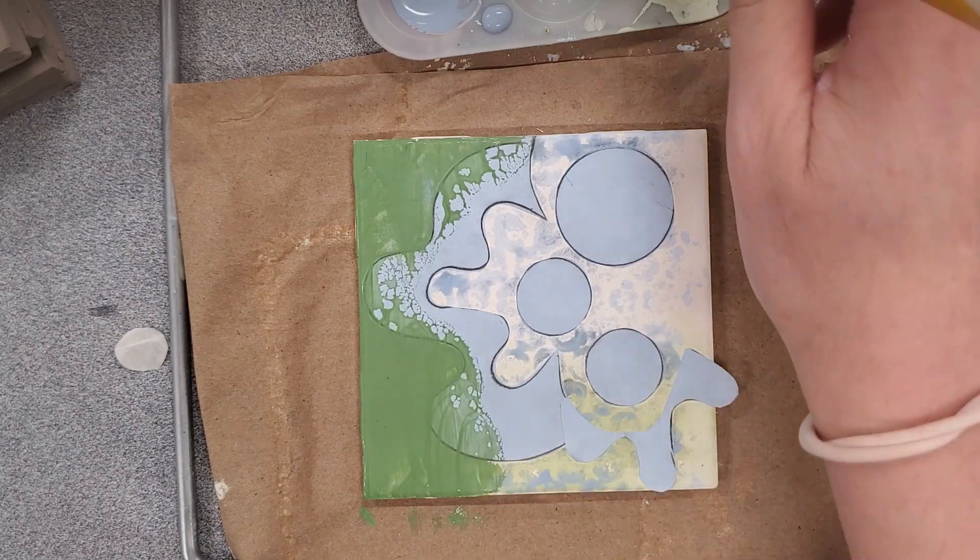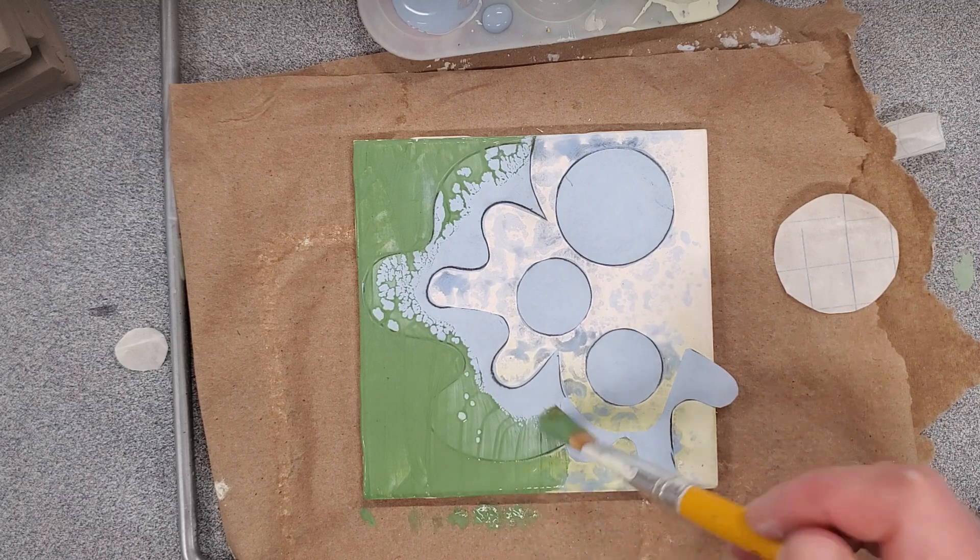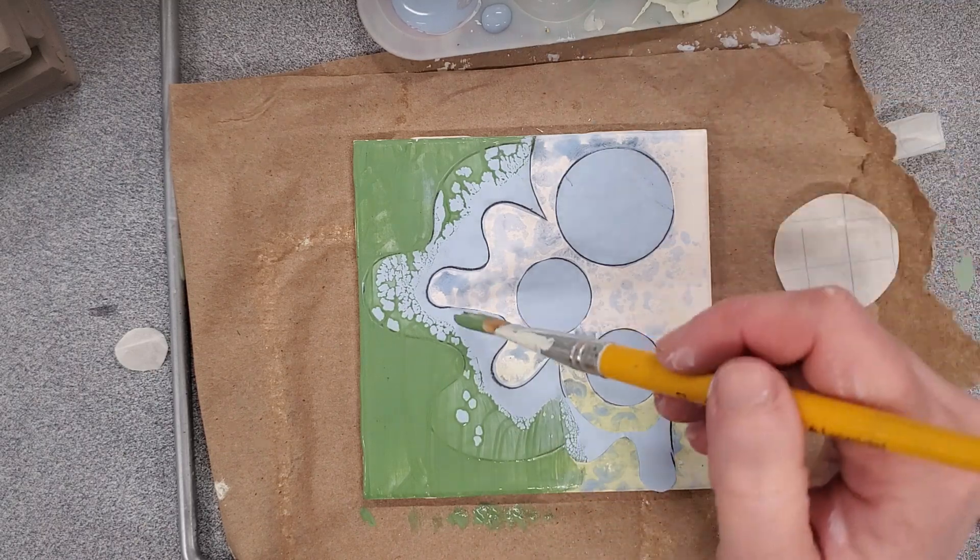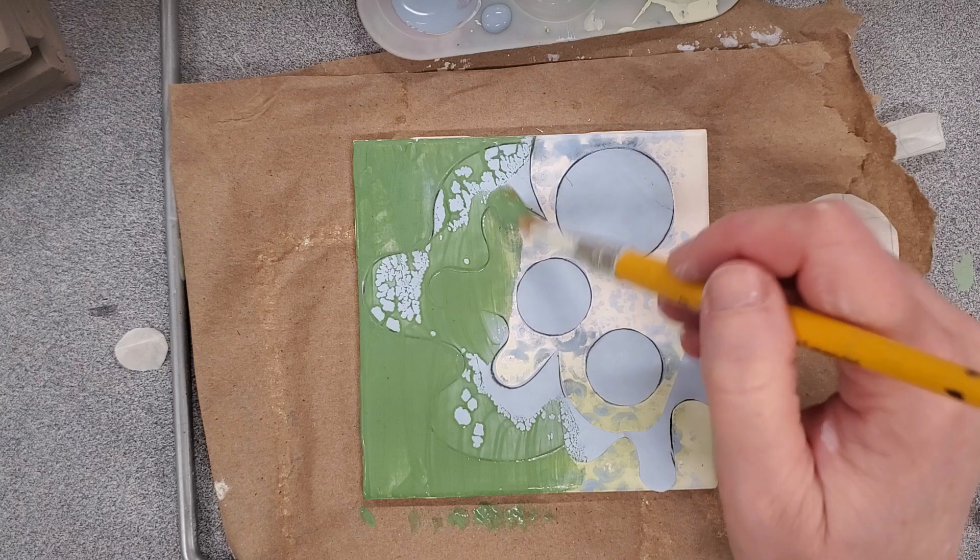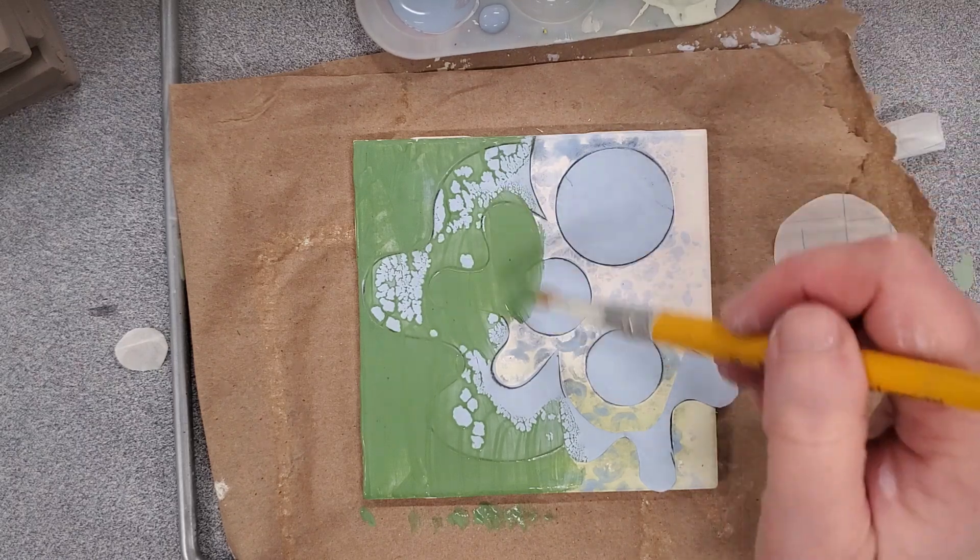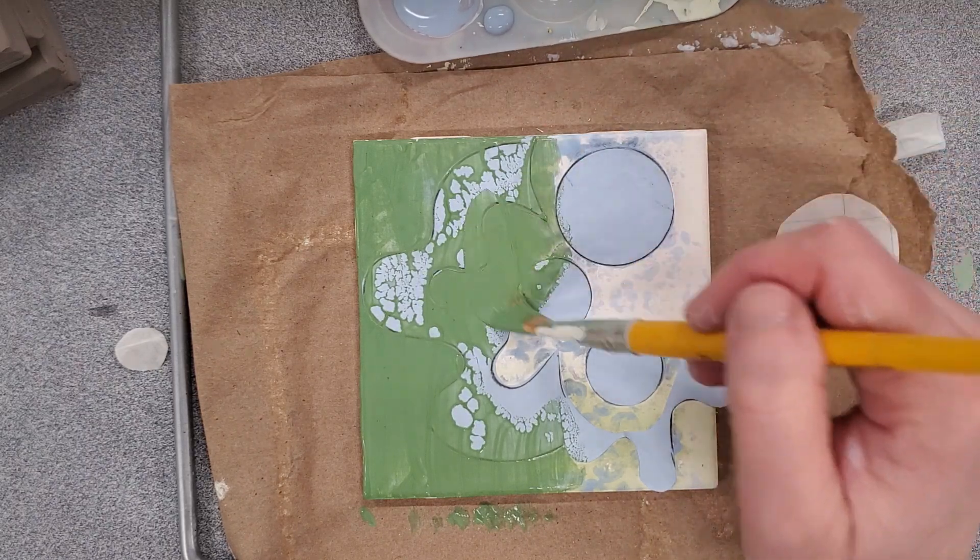Remember wherever the contact paper is it will remain the color of the tile which in my case is that kind of creamy white color and also the blue.